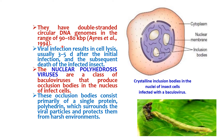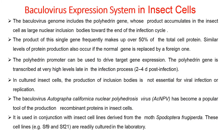The occlusion bodies protect the virus in the insect intestine. The genome of baculovirus ranges from 90 to 180 kilobase pairs. Viral infection results in cell lysis, usually three to five days after initial infection, and the subsequent death of the infected insect. The nucleopolyhedrosis virus is the class of baculovirus that produces occlusion bodies in the nucleus of infected cells, consisting primarily of a single protein — polyhedrin — which surrounds the viral particle and protects it from the harsh environment of the insect intestine.